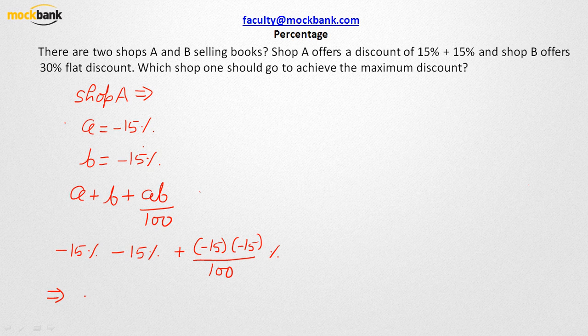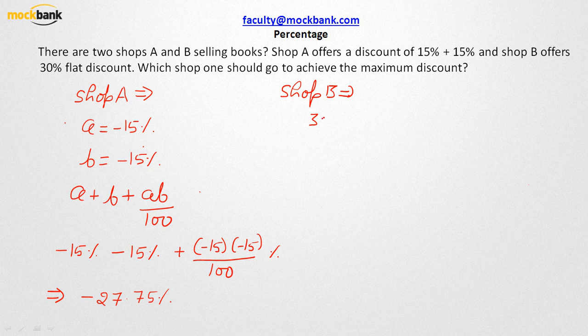Now if you solve it, you are going to get negative 27.75%. So Shop A is offering you a total discount of 27.75%. How much is Shop B offering you? Shop B is offering you a flat 30% discount. So which shop is offering you more discount? It is very clear that Shop B is offering you more discount.